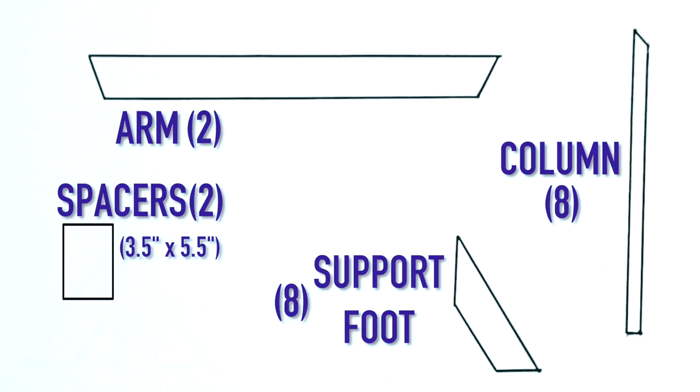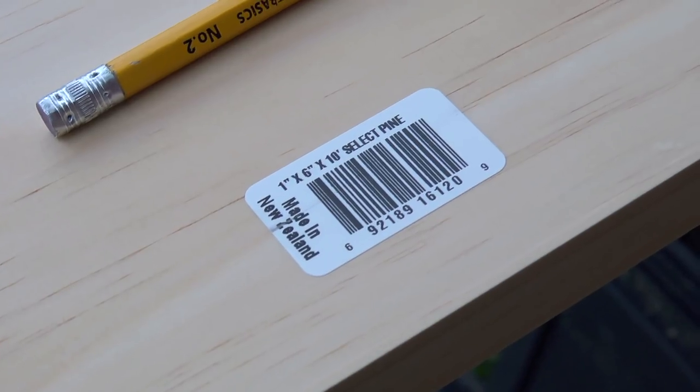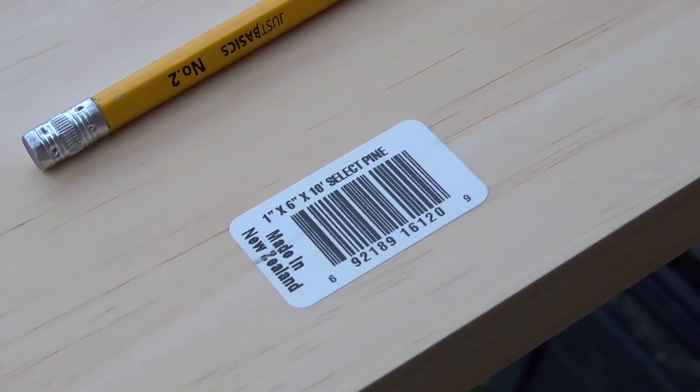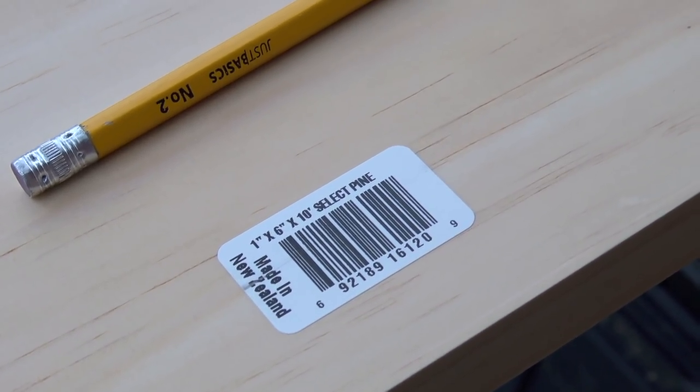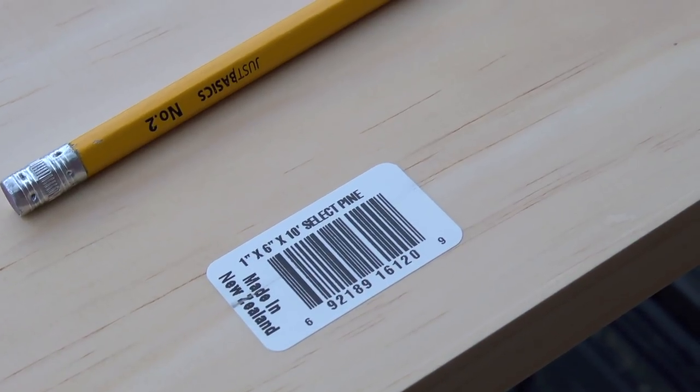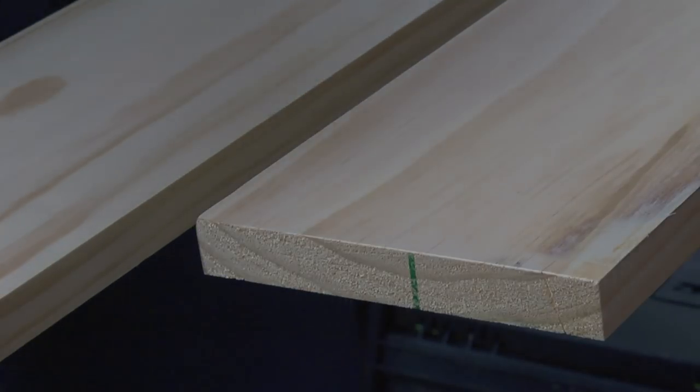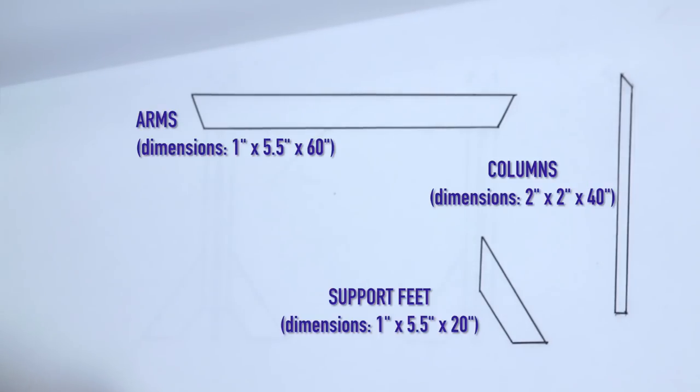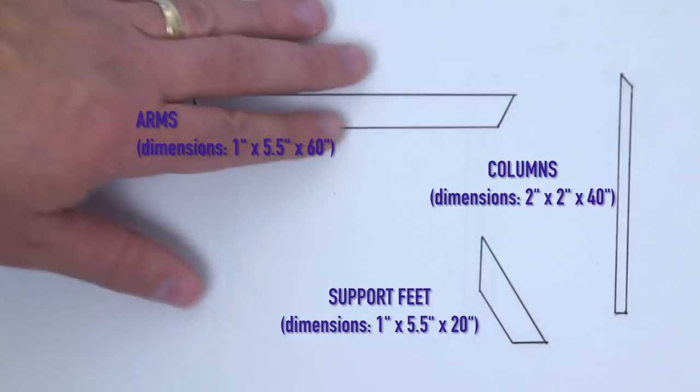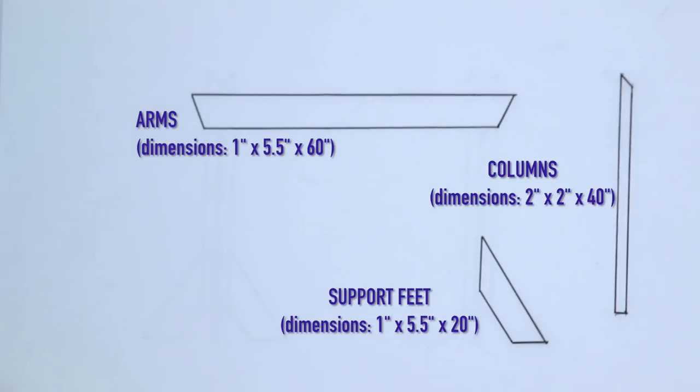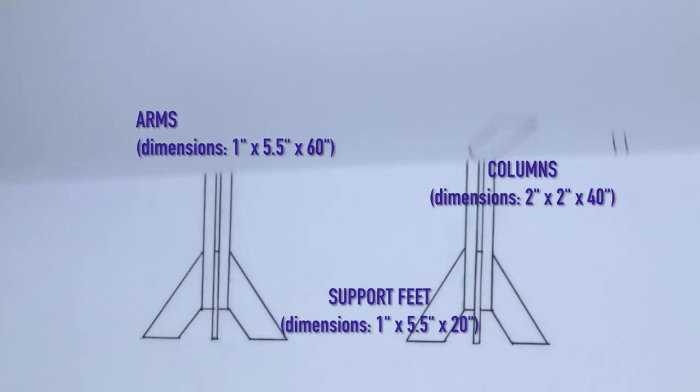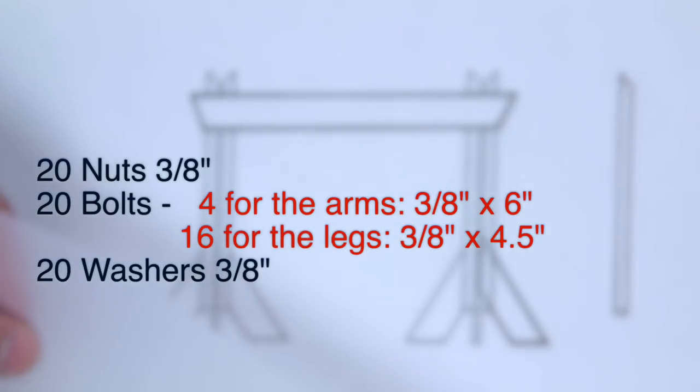What kind of wood did I choose? For most of the project I've chosen select pine because it's not going to be filled with knots. It's going to be very nice. They've planed it smooth. This is probably the grade you would use for some sort of furniture construction. We're going to look at the dimensions on the arms, the columns, and support feet individually. The project's going to require 20 nuts, 20 bolts, and 20 washers.